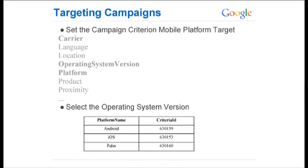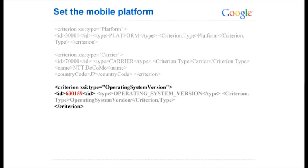We've set the carrier and the platform. We can also set operating system version. This is how we're exposing the different mobile OSes available to target — Android, iOS, and POMS. This might expand to desktops and other operating systems as well. To target Android, we set the criteria type to operating system version, and the ID we pass in is 630159, which corresponds to Android.